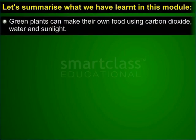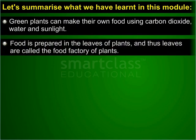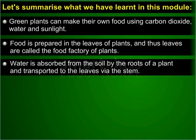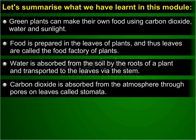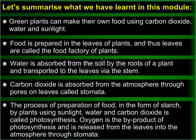Let us summarize what we have learned in this module. Green plants can make their own food using carbon dioxide, water and sunlight. Food is prepared in the leaves, which is why leaves are called the food factory of plants. Water is absorbed from the soil by the roots and transported to the leaves via the stem. Carbon dioxide is absorbed from the atmosphere through pores called stomata. The process of preparing food in the form of starch using sunlight, water and carbon dioxide is called photosynthesis. Oxygen is the by-product of photosynthesis and is released into the atmosphere through stomata.